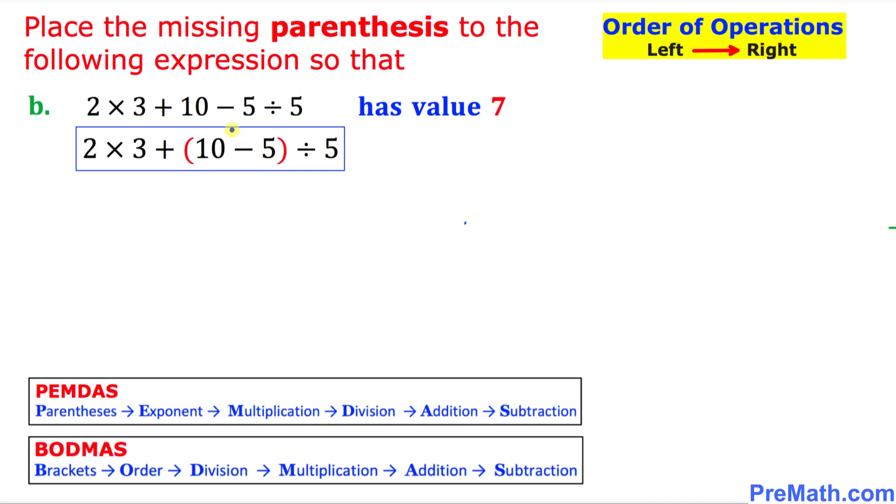So let's start off with this parentheses. 10 minus 5 is going to give us 5. Let's put it down 5. So this thing is going to become 2 times 3 plus this turns out to be a 5 divided by 5. We're going to start from the left hand side.